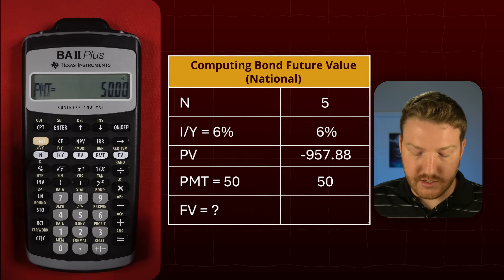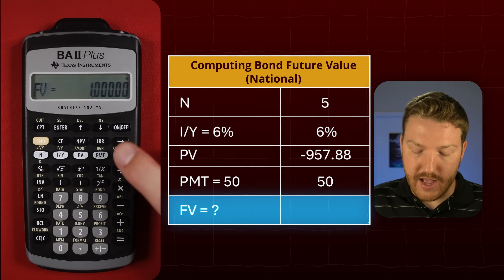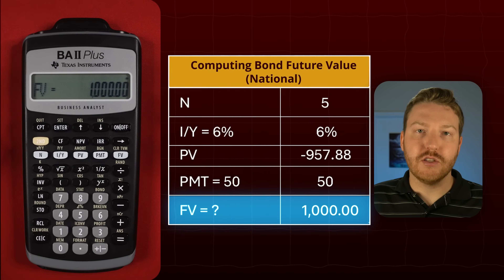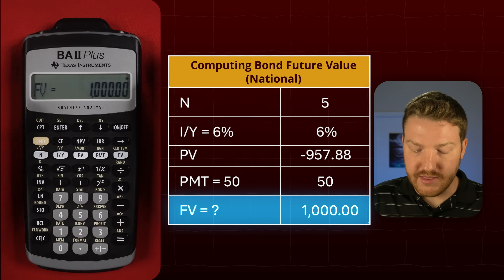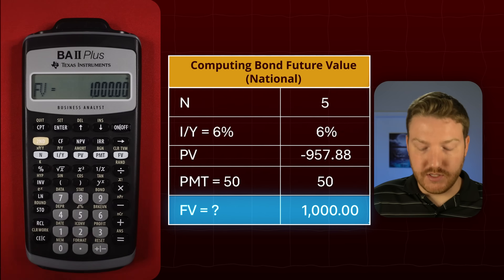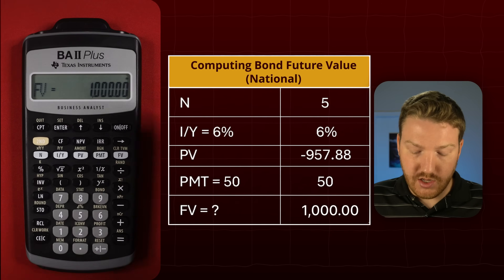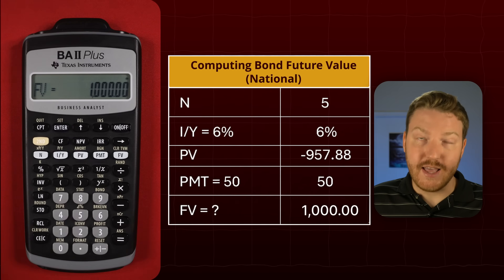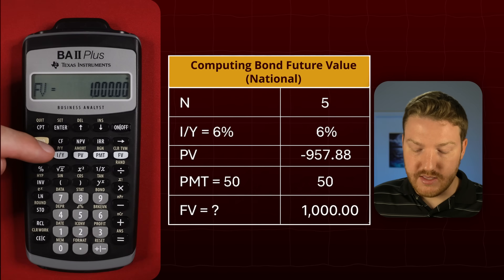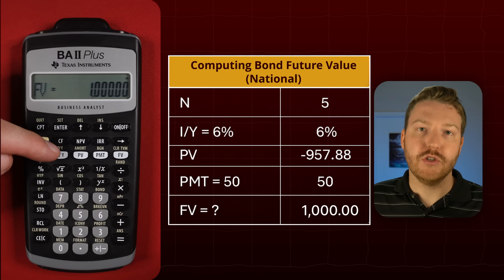So let's confirm that. We'll do compute and then future value, and we find that this bond is going to pay out a notional at the end of $1,000. The price of it today was only $957.88. So this bond is trading at a discount because the coupon rate is lower than the required rate of return, or interest per year.